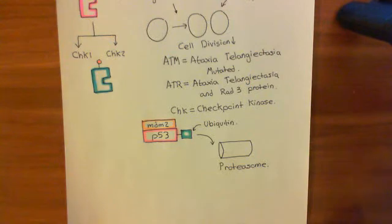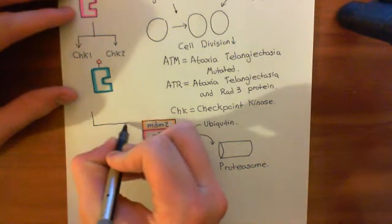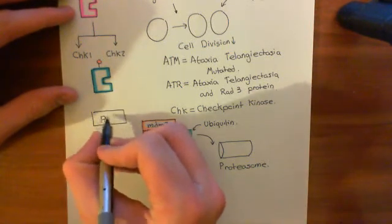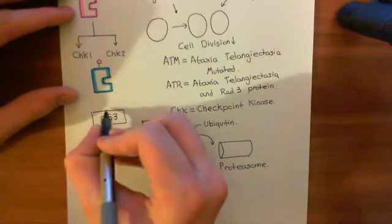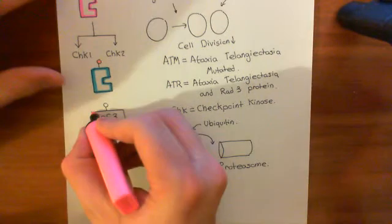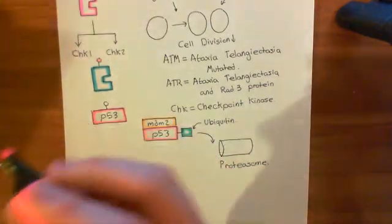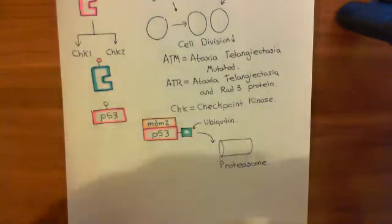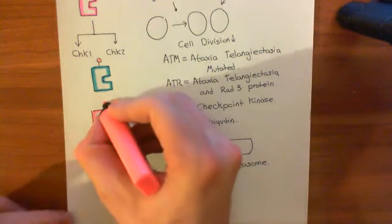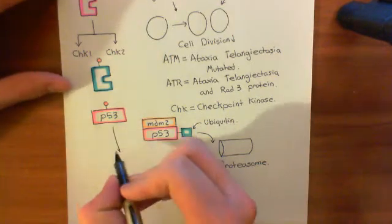What's going to happen when you activate checkpoint kinase 1 and checkpoint kinase 2 enzymes is they are going to phosphorylate the newly made P53. They're going to stick a phosphate group onto it, and when you stick a phosphate group onto the newly made P53, this phosphate group stops the MDM2 protein from being able to bind to the P53. So now P53 is saved.